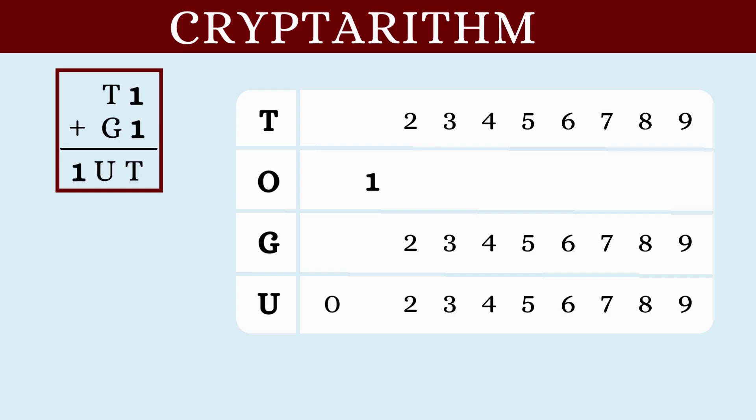So we get T1 plus G1 is equal to 1UT which means 1 plus 1 will give us the value of T. So T is equal to 2. So let us remove all other values of T. Also, G and U cannot have a value of 2, so let us remove that as well.